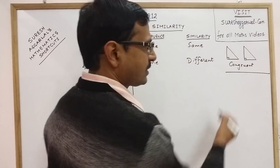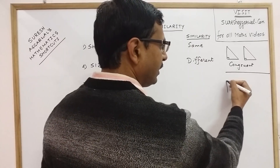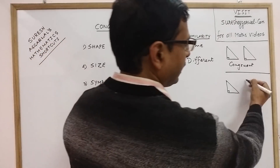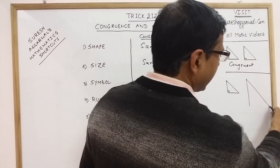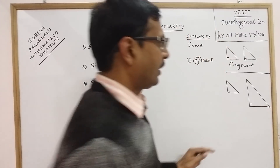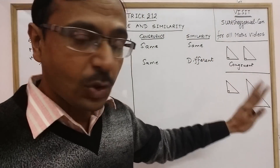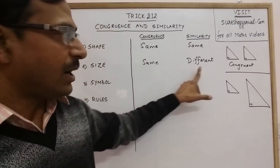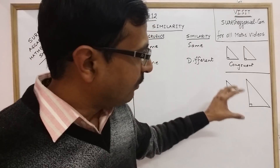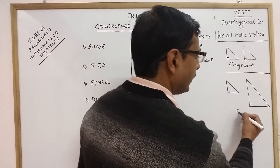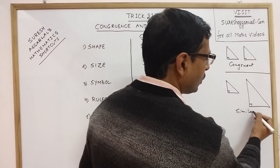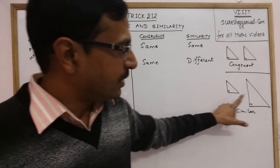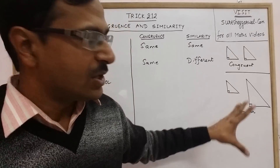When we talk of similar triangles, if we have a right-angled triangle of a particular measurement, then we can have a larger right-angled triangle. Their shape is the same because both are right-angled triangles, but their sizes are different. So in this case, we can call them similar — they are similar in looks, having the same shape but different sizes.